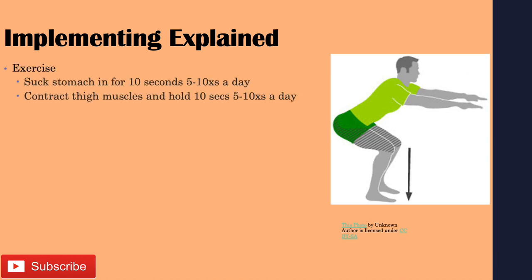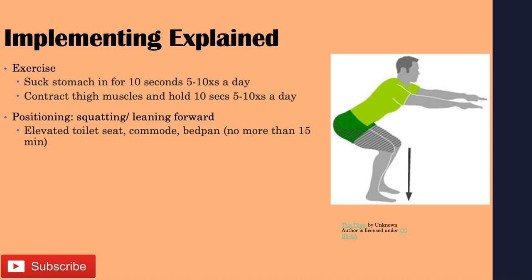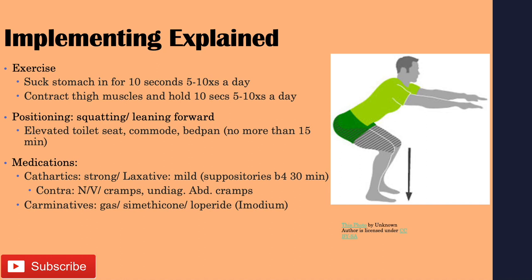For implementation, encourage your patient to exercise — suck in their stomach and hold for 10 seconds, five to ten times per day, and contract their thigh muscles and hold for 10 seconds, five to ten times per day. Encourage proper positioning: the patient should be squatting and leaning forward. They can use an elevated toilet seat, commode, or bedpan — but do not leave the patient on a bedpan for more than 15 minutes, as this can lead to skin breakdown. Cathartics are strong laxatives; laxatives can be mild. Suppositories can be used 30 minutes before the indicated bowel movement. Contraindications include nausea, vomiting, and undiagnosed abdominal cramps. Carminatives are used for gas — examples include simethicone, loperamide, and Imodium.